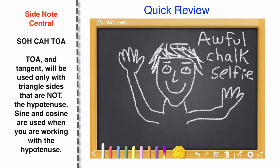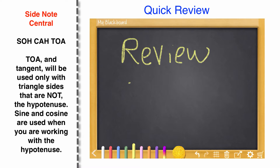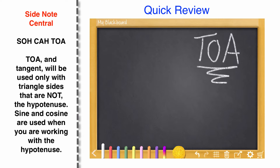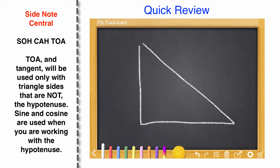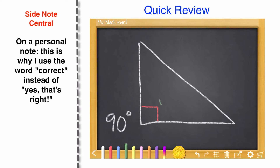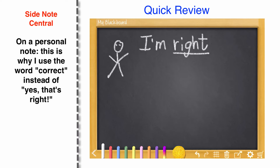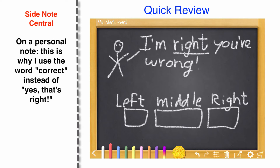Before we go too headlong into tangent, there are two quick things I'd like to review so you'll be in good shape. First, we're using the TOA part of SOH CAH TOA. TOA helps you remember that the tangent of an angle equals the opposite over the adjacent side lengths. Using tangent in this way applies only to right triangles, where one of the three interior angles is 90 degrees.